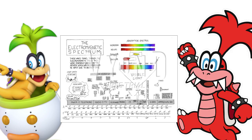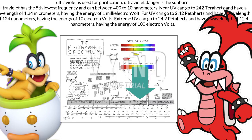Ultraviolet is used for purification. Ultraviolet danger is sunburn. Ultraviolet has the 5th lowest frequency and can range between 400 to 10 nanometers. Near UV can go to 242 Terahertz and have a wavelength of 1.24 micrometers, having the energy of 1 millielectron volt. Far UV can go to 2.42 Terahertz and have a wavelength of 124 nanometers, having the energy of 10 electron volts. Extreme UV can go to 24.2 Terahertz and have a wavelength of 12.4 nanometers, having the energy of 100 electron volts.